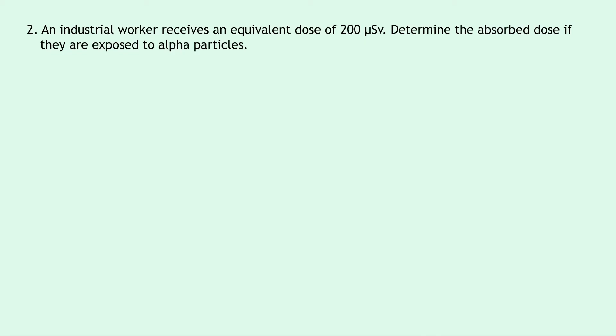While writing down what we know from the question, we're trying to find D this time. We know that H is 200 micro Sieverts and we need to rewrite that in Sieverts. So this becomes 200 times 10 to the minus 6 Sieverts. And lastly, we're told that we're dealing with alpha particles in this question.